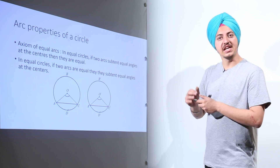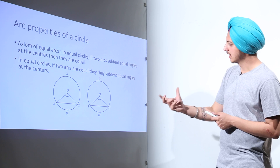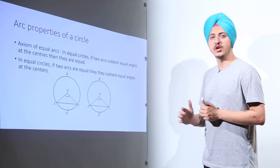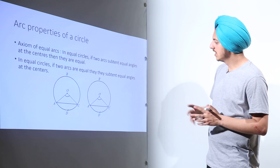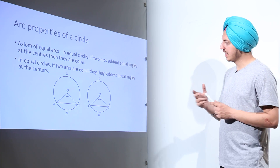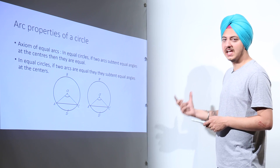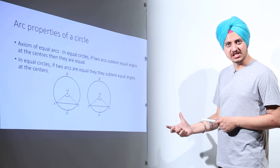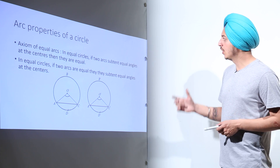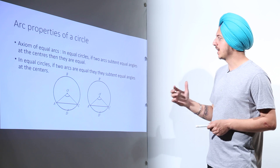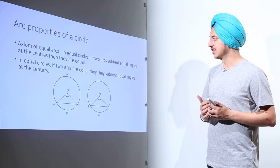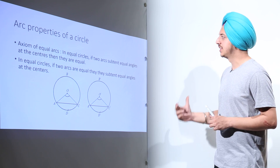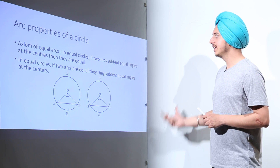In equal circles, there are two equal circles as you can see in the figure. In equal circles, if two arcs subtend equal angles at the center — there are two arcs in both circles. In the first circle the arc is AC, and in the second circle the arc is A-dash C-dash. If these two arcs subtend equal angles at the center, that means angle AOC should be equal to angle A-dash O-dash C-dash, then these arcs are equal.